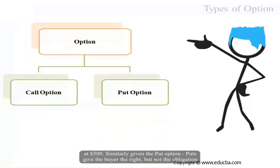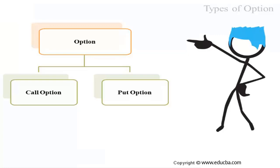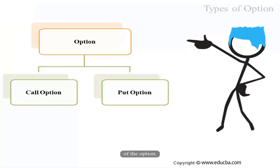Similarly, a put option gives the buyer the right, but not the obligation, to sell a given quantity of the underlying asset at a given price on or before a given date. For example, if you already own HSBC shares and want protection in case the price falls, you buy a put option — the right to sell at $500. Even if the market price falls to $450, you can still sell it at $500. These were the types of options.